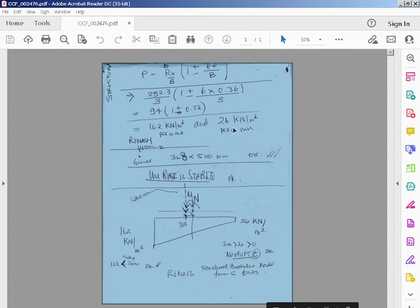Therefore the P max is 162 and the P min equals 26, so therefore the base is okay. As long as you've got say bearing capacity of 200 kilonewtons per meter.